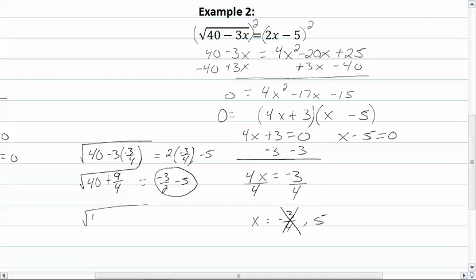So we have √(40 - 3 × 5) = 2 × 5 - 5. So we have 40 - 15, which gives me 25, equal to 10 - 5, which would give me 5. Square root of 25 is 5, so that one checks. So that means our answer, then, is x = 5.